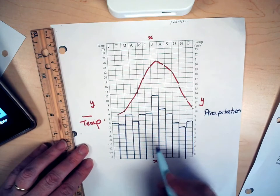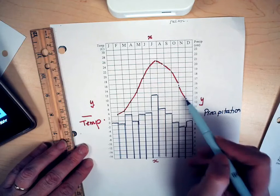Now I have a climatogram, line graph showing temperature, bar graph.